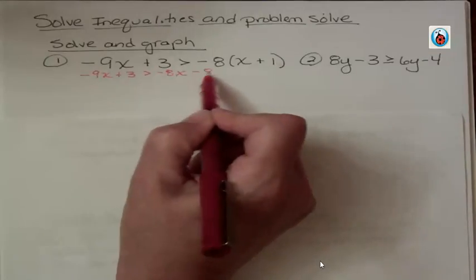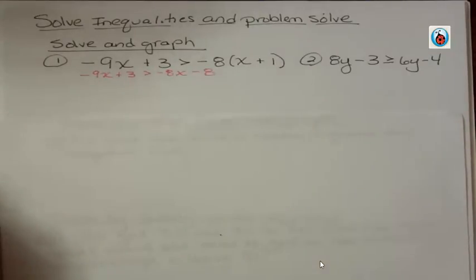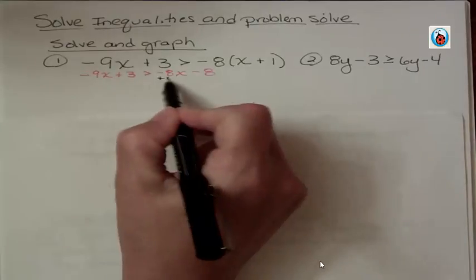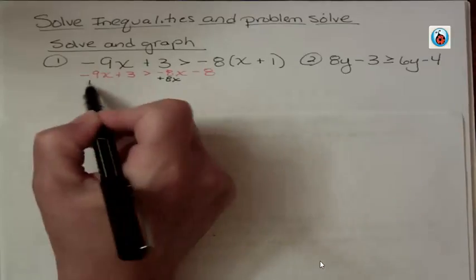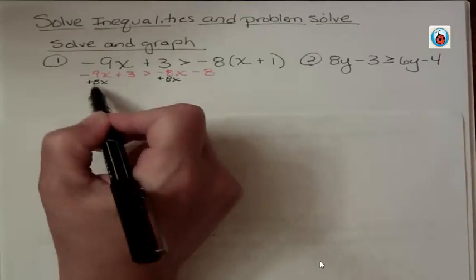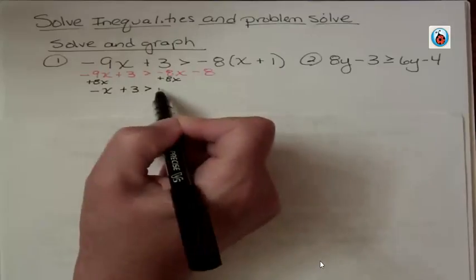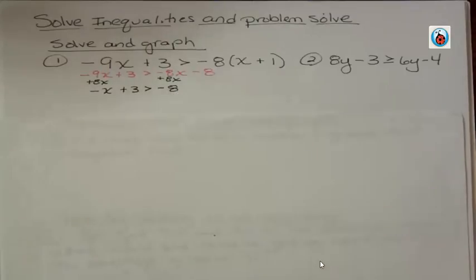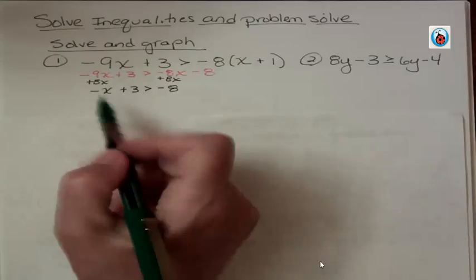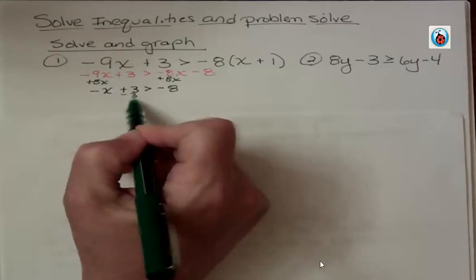Now I want to move my variables to the left and my constant terms to the right, and I'm going to add 8x. Negative 9 and positive 8 gives me negative x. Don't forget about the minus sign in front of your 8. Then I'm going to get rid of the positive 3 by subtracting 3.